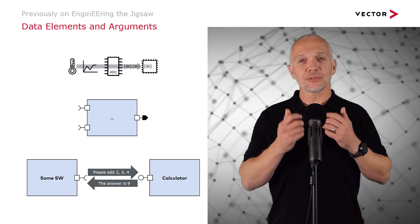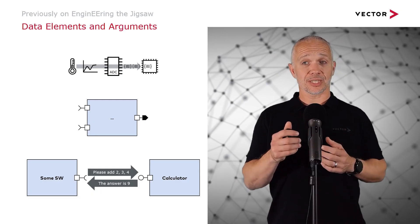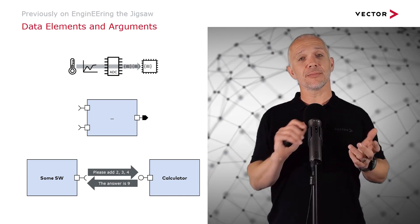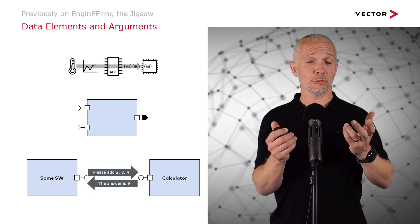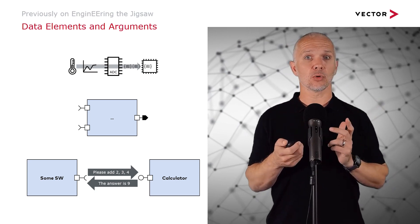Previously on Engineering the Jigsaw, we've talked about data elements and arguments and how they can describe the kinds of information flows that we may see in software, flows that correspond to streamer values or requests for behavior.